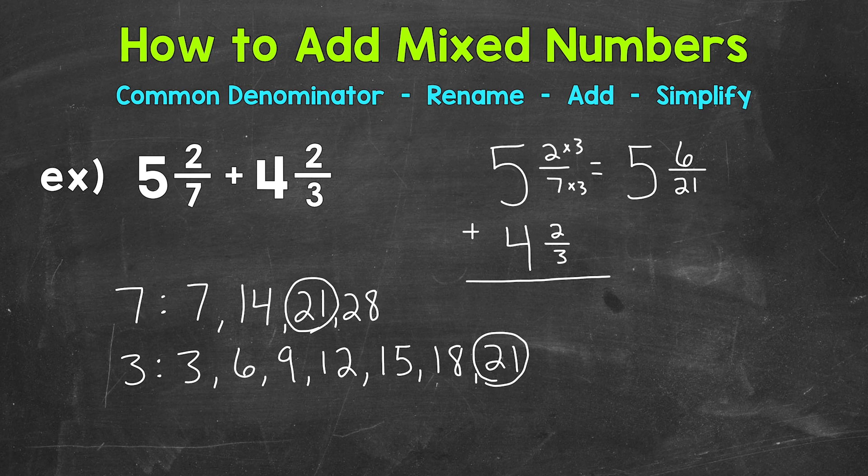So 6 twenty-firsts is equivalent to 2 sevenths. We're not changing the value of the problem at all. These are equivalent fractions. We're just renaming using that common denominator. Let's bring the addition sign over.